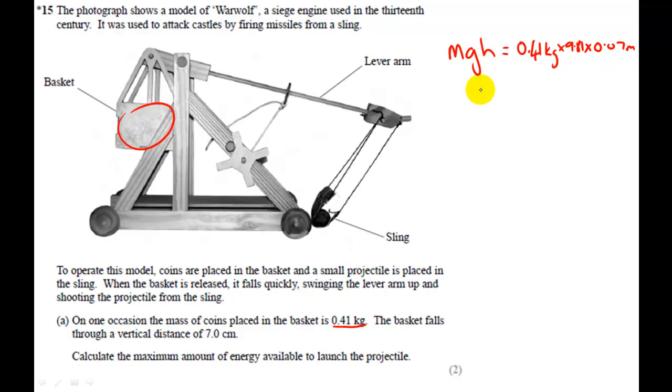All right, multiplying these out, just use the calculator quickly. 0.41 multiplied by 9.81 multiplied by 0.07 gives us 0.281547. Right, so this is going to be in joules, and I'm just going to keep it as that. That's my answer.